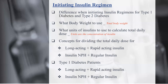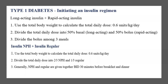The main concept for type 1 diabetes patients is we can either give them long acting plus rapid acting, or insulin NPH plus regular insulin. When initiating the long acting plus rapid acting regimen, we use the total body weight to calculate the total daily dose. The units to memorize for exams is 0.6 units per kilogram per day. However, the question may provide the units the patient is already using, so use 0.6 as the base and check the question for any units provided.